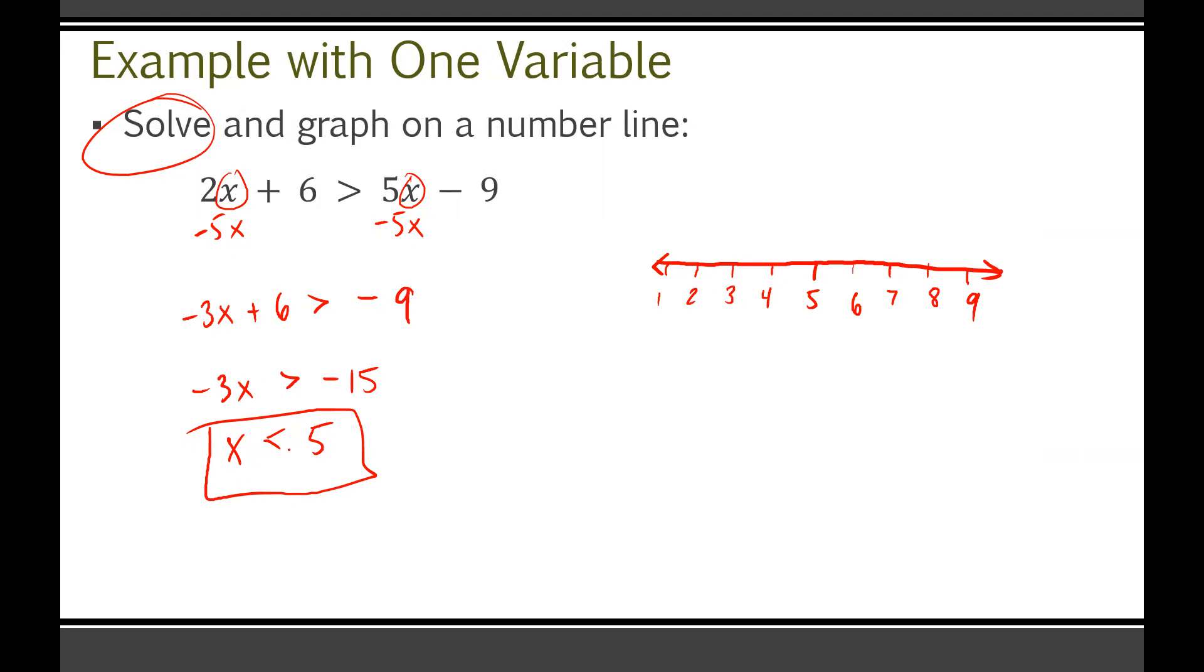But it says graph on a number line. When I mentioned earlier that this is a one-dimensional problem because there is only one variable, it's just x, there's no y's in here, that means we can graph this one-dimensionally, on a flat, straight line. Now, when we make a number line, I always base it around whatever your number was in your solutions. Since it's x is less than 5, I'm going to base it around 5 in the very center.